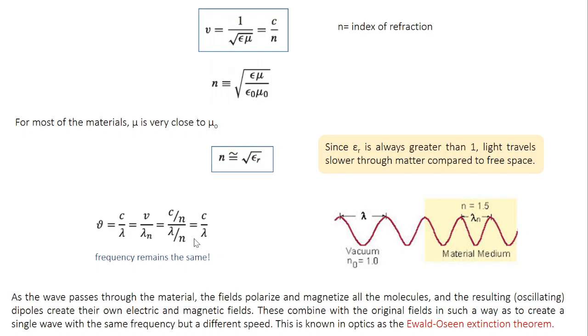Now physically what's happening? So as the wave is passing through the material, the wave consists of electric and magnetic fields. So electric fields polarize the molecules in the material. Similarly, the magnetic field magnetize the molecule. So as a result of this polarization and magnetization, you have dipoles created inside the material. Since the incident fields are oscillating, we are talking about sinusoidal waves here. So since the fields are oscillating, the dipoles are also oscillating.